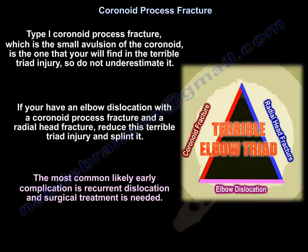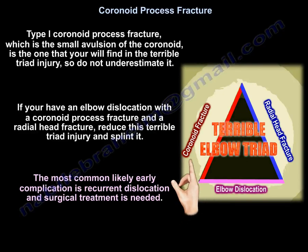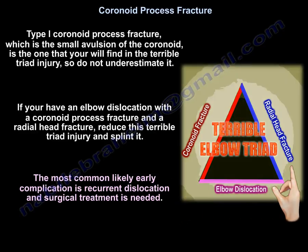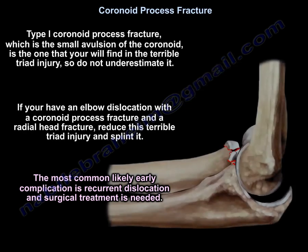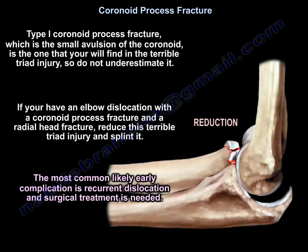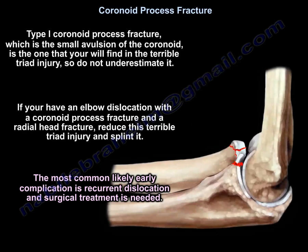If you have an elbow dislocation with a coronoid fracture and a radial head fracture, reduce the terrible triad injury. The most common likely early complication is recurrent dislocation, and surgical treatment is needed.